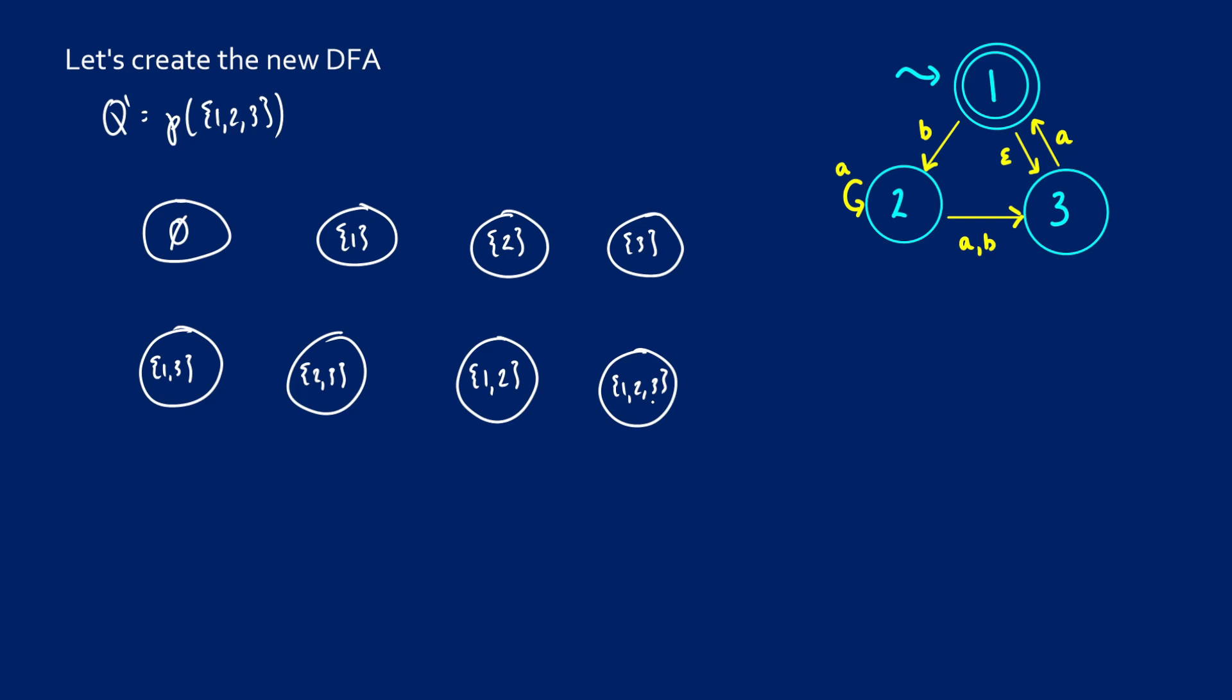We're going to have a new start node. So how are we going to pick our start node? Well, originally our start node was 1, so our new start node should be 1 as well. But if we take a look at the original graph, we have this empty transition function to 3. So our start node could be 1 or 3, which means that we can actually start there at 1 or 3.